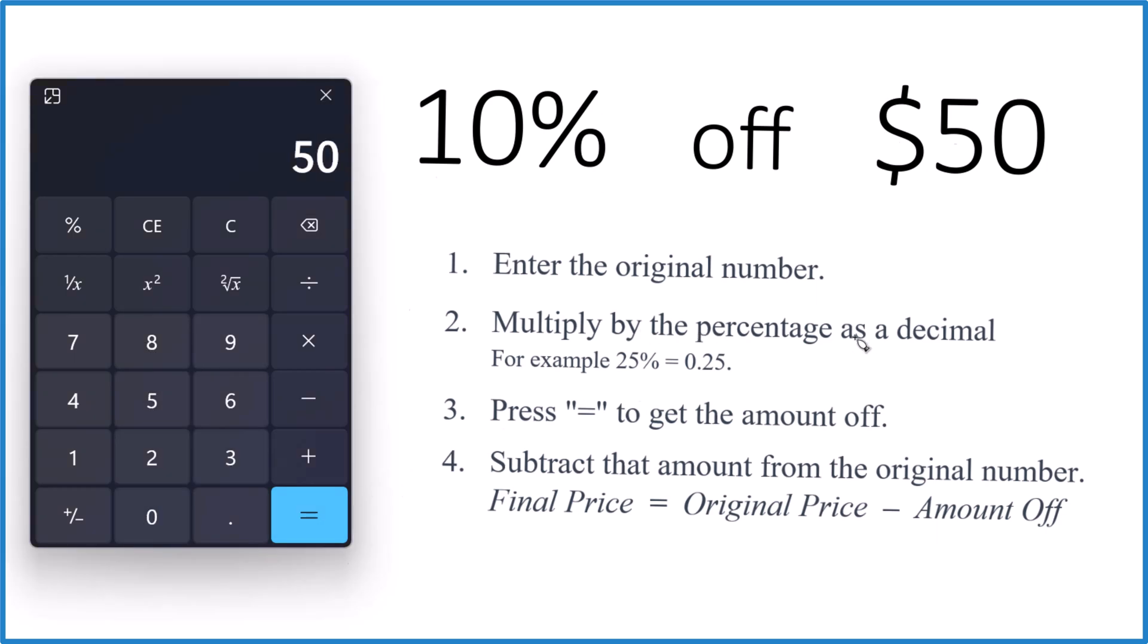And then you multiply that by the percentage as a decimal. So 25% becomes 0.25, 10% becomes 0.10 or just 0.1. So times 0.10, end up with five.